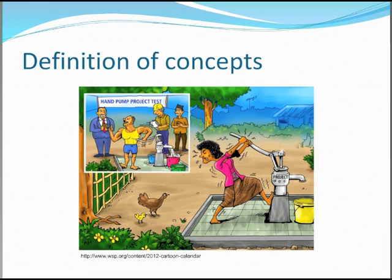This picture depicts gender roles — the expected attitudes and behaviors of men and women in a society. We can guess that these roles were not taken into account; the project planners didn't consider who does what. If they had carried out a basic gender analysis — who does what, who has what — the outcome of the project might have been more successful. So we can start to see why thinking about gender from the very beginning is really important for success in our work.